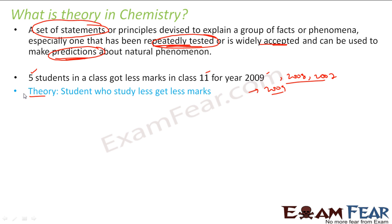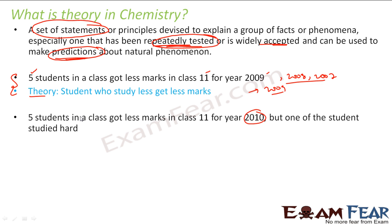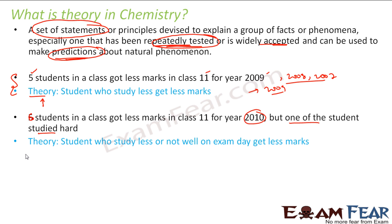Then in 2010, some students again got less marks, but one student had studied hard and still got less marks. So the theory failed for that student. The teacher investigated and found that a student who is not well on exam day will also get less marks. So the theory was updated: students get less marks if they study less or if they are not well on exam day. The theory got improvised.